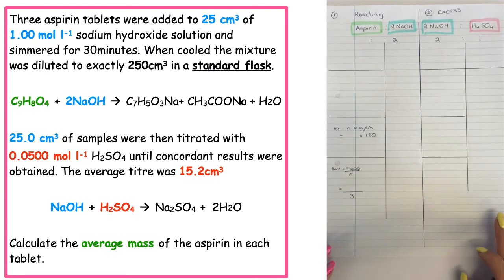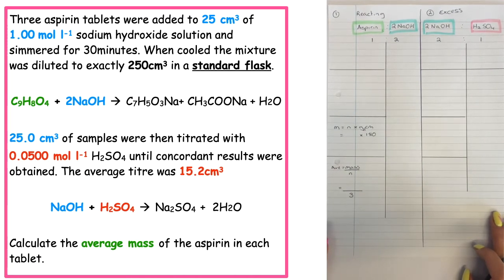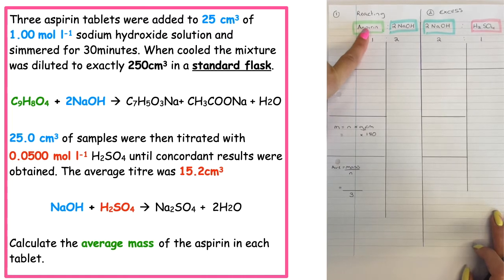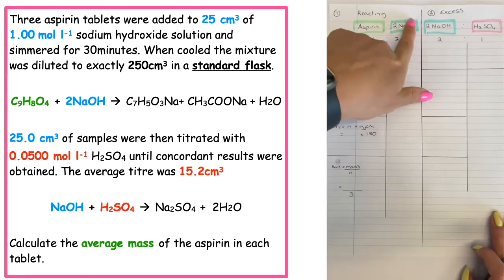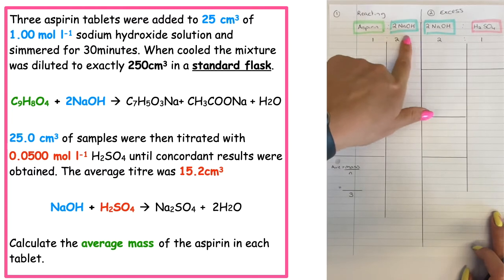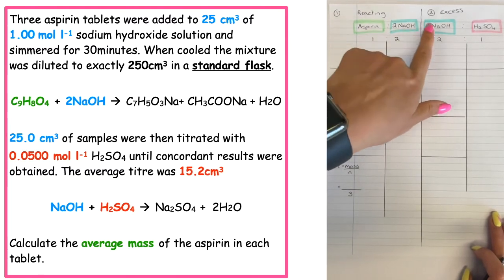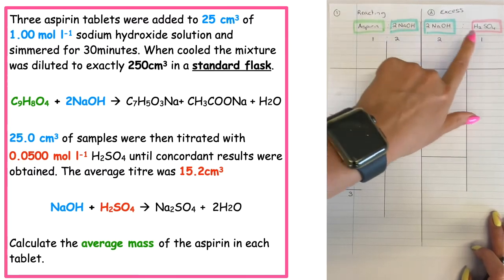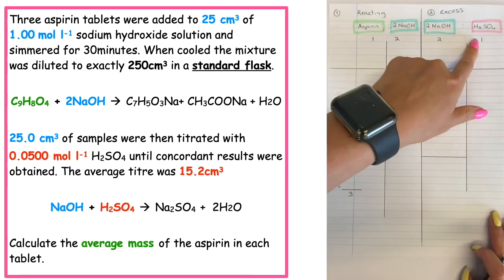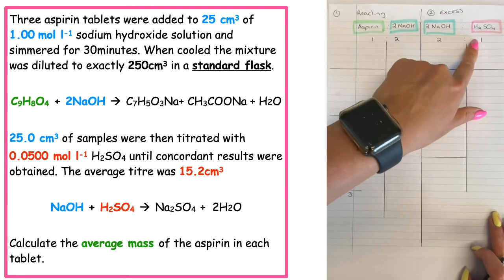In this question, we are reacting aspirin with sodium hydroxide in our initial reacting equation, and the excess sodium hydroxide — the stuff that was left over — is reacting in a second equation with our sulfuric acid. So this is an example of a back titration.